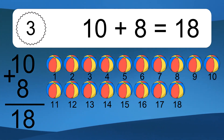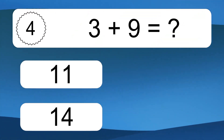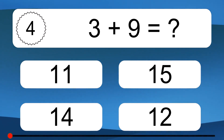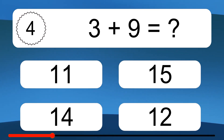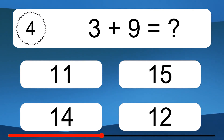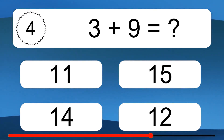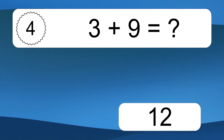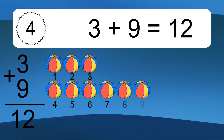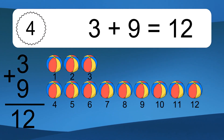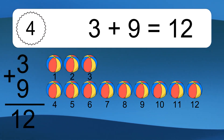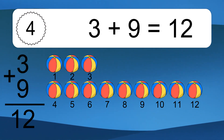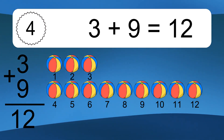18. 3 plus 9 equals what? Let's count it. 1, 2, 3, 4, 5, 6, 7, 8, 9, 10, 11, 12.